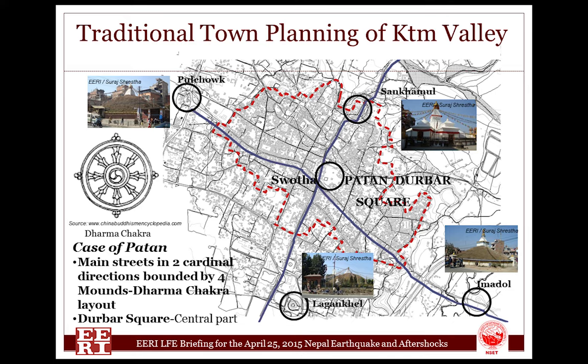Traditional Kathmandu Valley towns were planned with orientation to gods and cosmic laws. Image of cosmos was used to build and border the towns. Patan was planned in a dharma chakra, or the Buddhist wheel of righteous layout, with its main streets running in two cardinal directions, founded by four thurs or mounds at Lagankhil, Imadol, Sangkhamul, and Pulchok, meeting somewhere near the Swatha area.